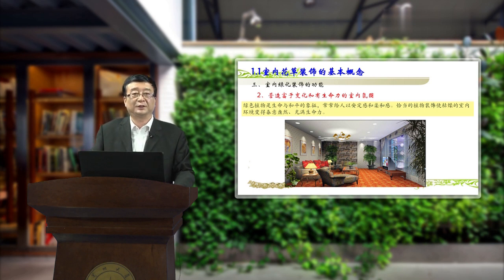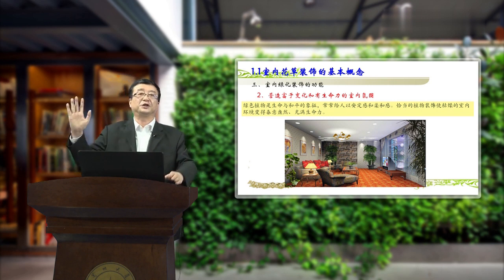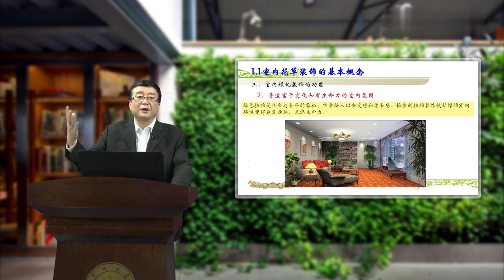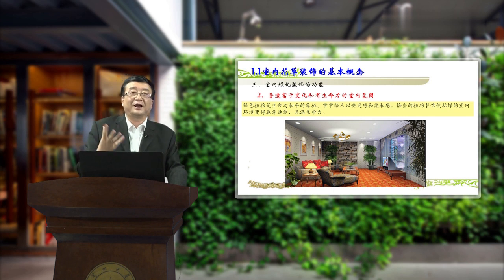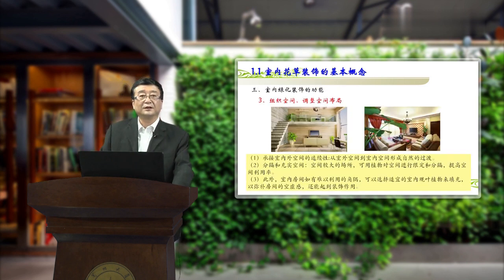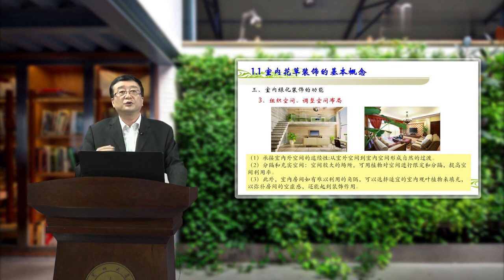室内绿化装饰的功能二：它可以营造赋予变化和有生命力的室内氛围。绿色植物是生命与和平的象征，常常给人以安定感和柔和感，恰当的植物装饰使枯燥的室内环境变得春意盎然、充满生命力。我们现在的室内全是水泥、玻璃、金属和家具，都是硬线条，我们把绿色的植物搬进去以后，使家里变得柔和，让人感到安定、春意盎然。